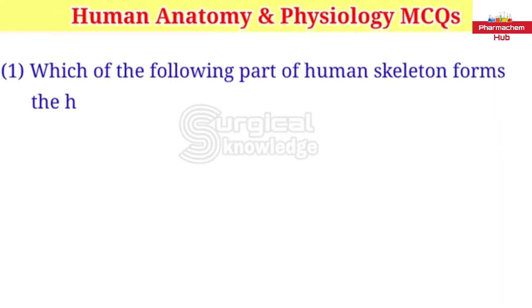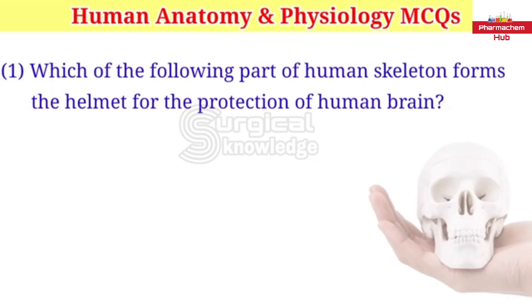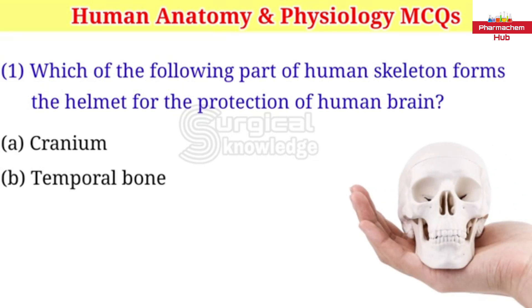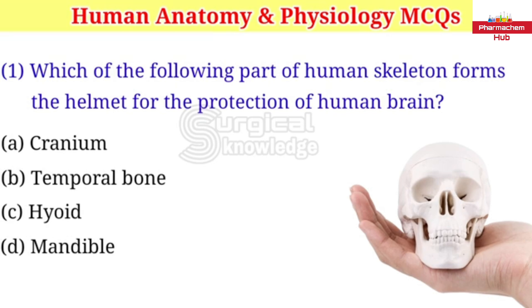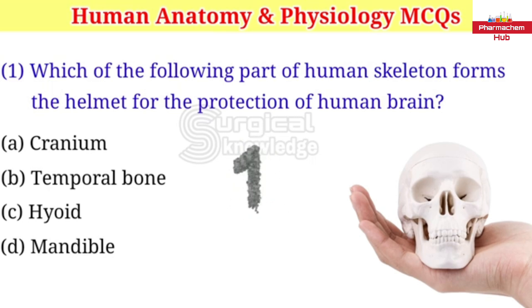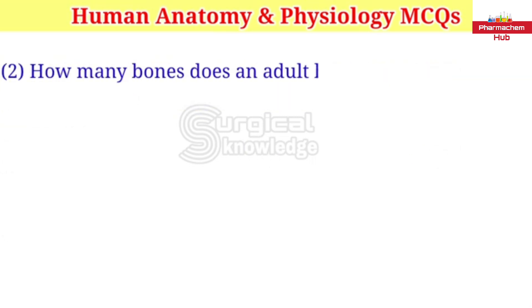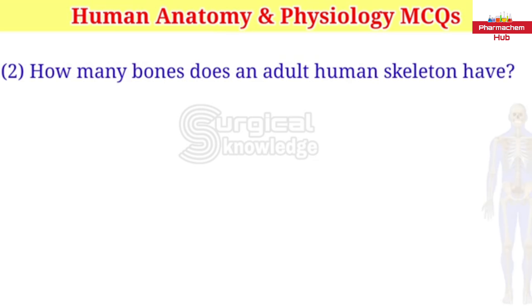Human Anatomy and Physiology MCQs. Which of the following part of human skeleton forms the helmet for the protection of human brain? A. Cranium B. Temporal bone C. Hyoid D. Mandible. Right answer is Cranium.